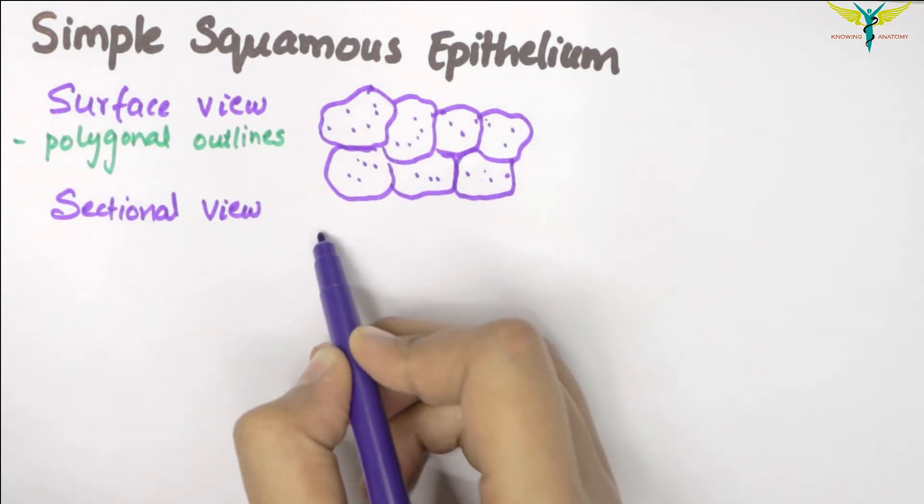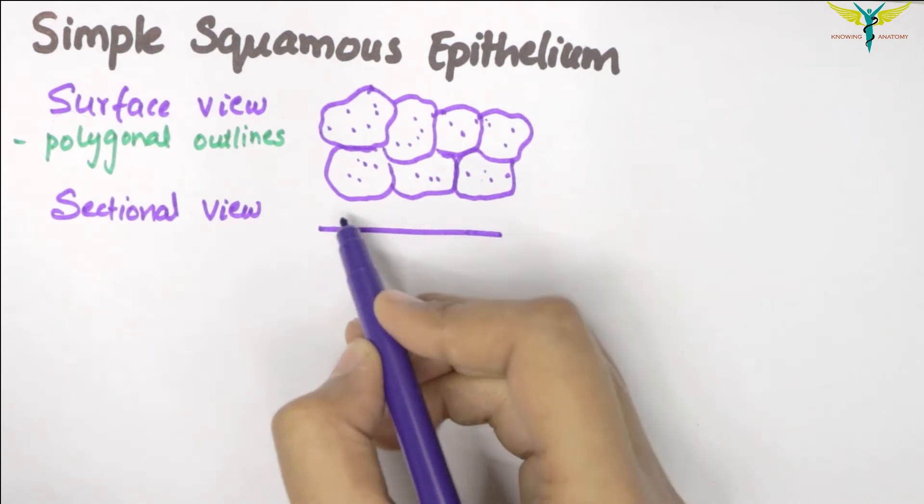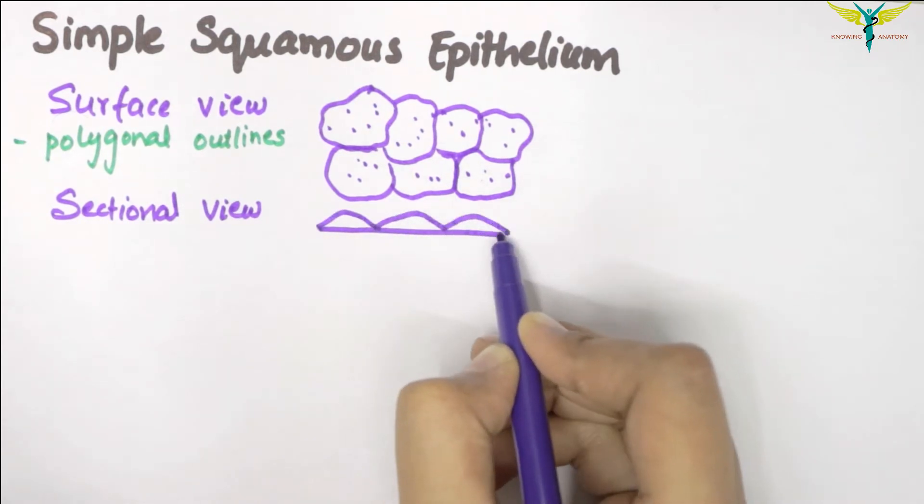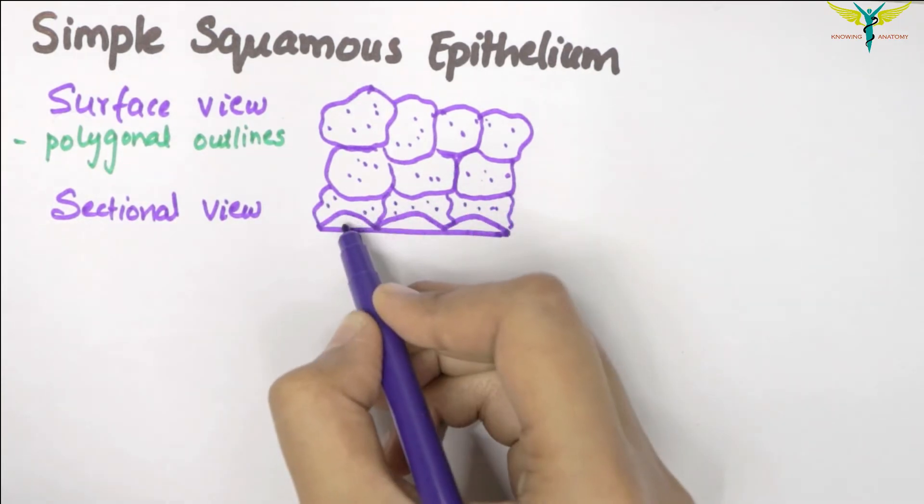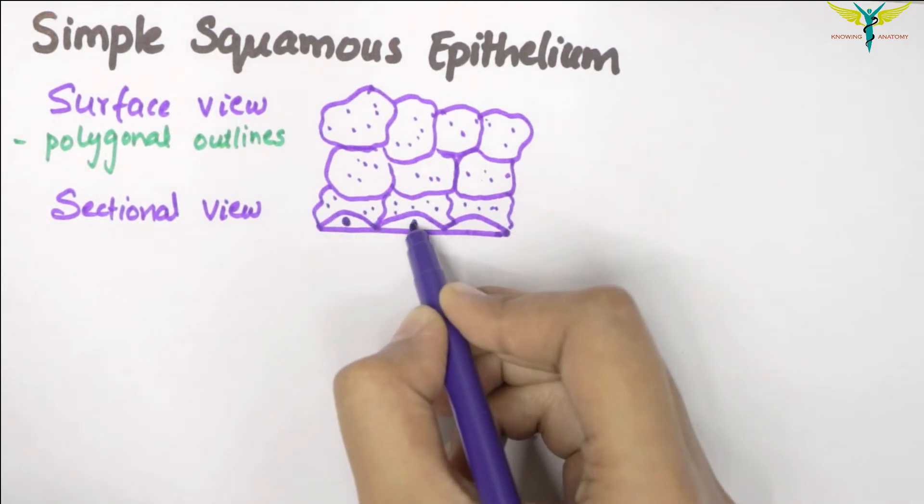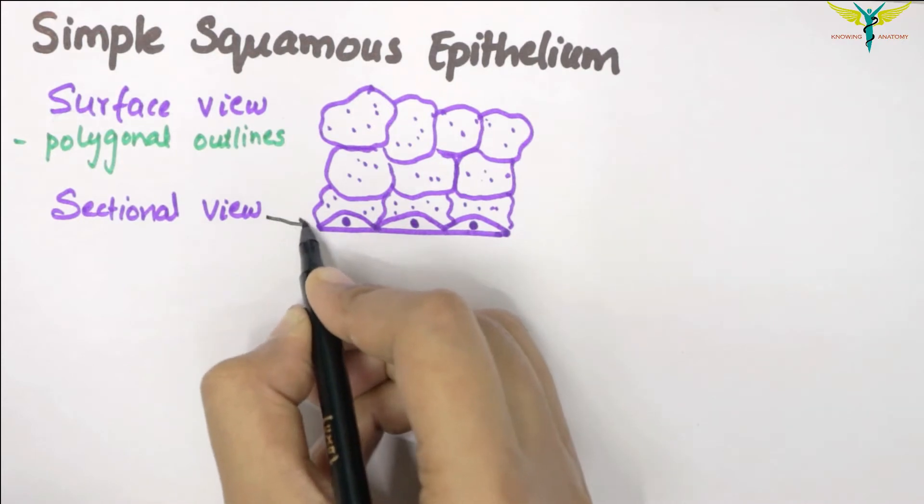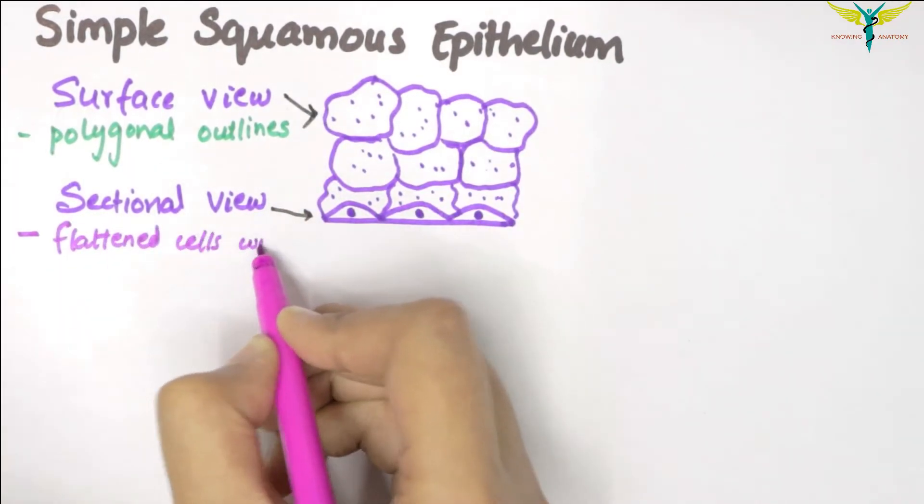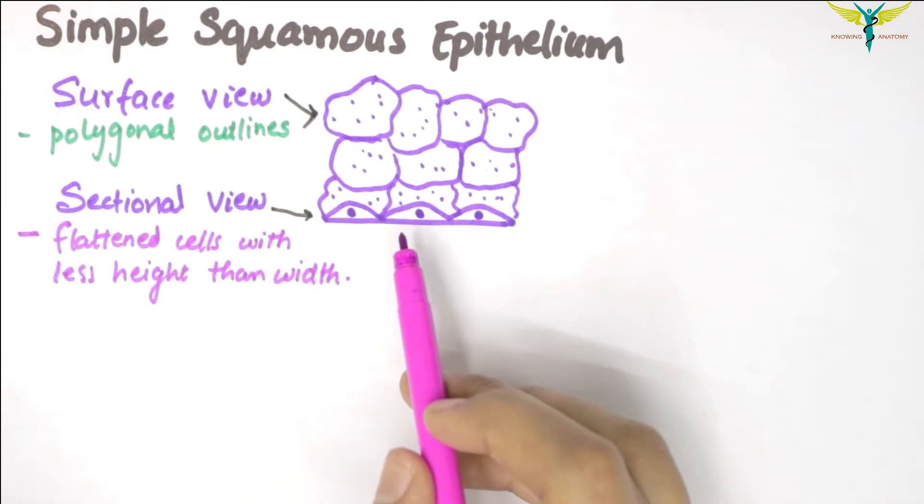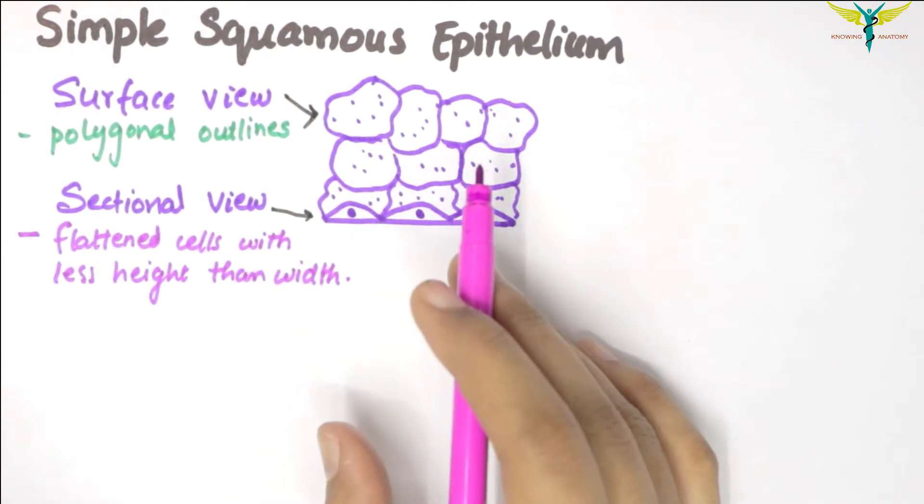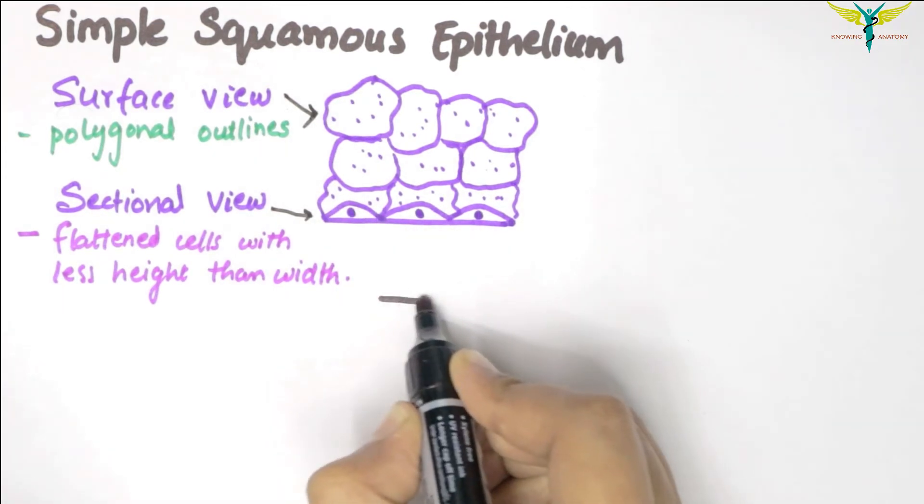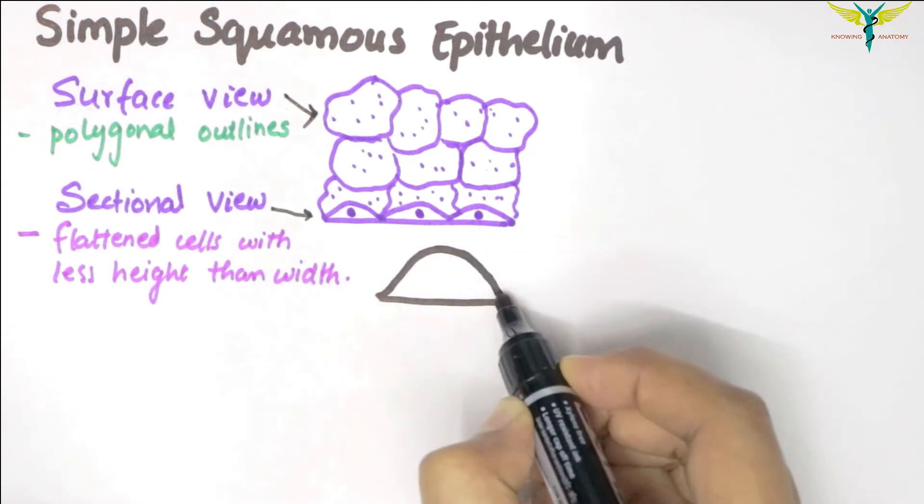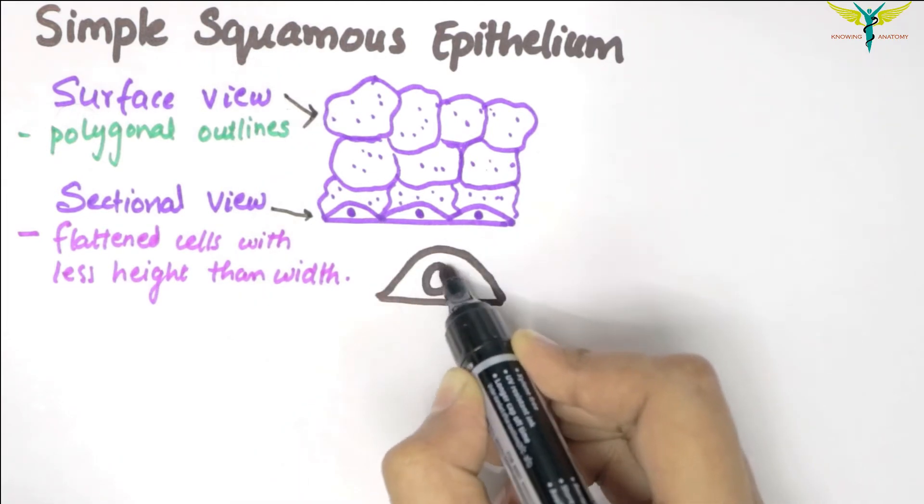This is the surface view, this is the basement membrane, and these are the squamous epithelium with the nuclei inside it. The cytoplasm of these cells forms only a thin layer. The nuclei produce bulgings of the cell surface, so this is the cell and the bulging is due to the inside nuclei.